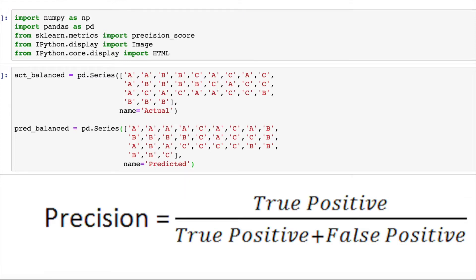I have three classes A, B and C and I have their actual and predicted values contained in two entities namely act_balanced and pred_balanced which are two pandas series objects.